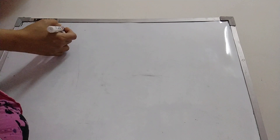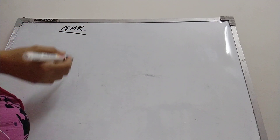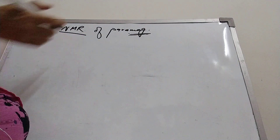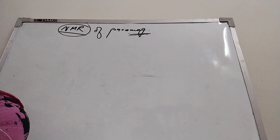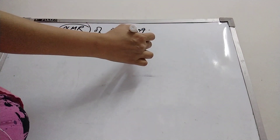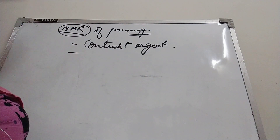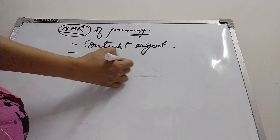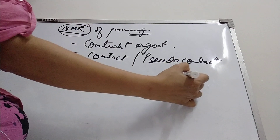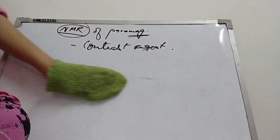Welcome back to our class. In the last class we discussed NMR spectra, specifically NMR of paramagnetic substances — what happens when you add paramagnetic substances in solution to NMR spectroscopy. Today we will deal with contrast agents and we will also complete the topic of contact and pseudo contact shift.